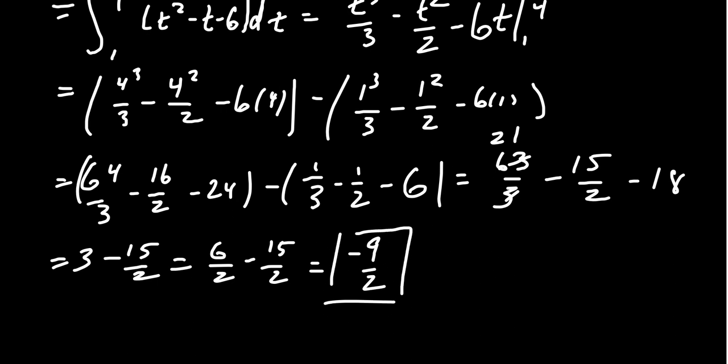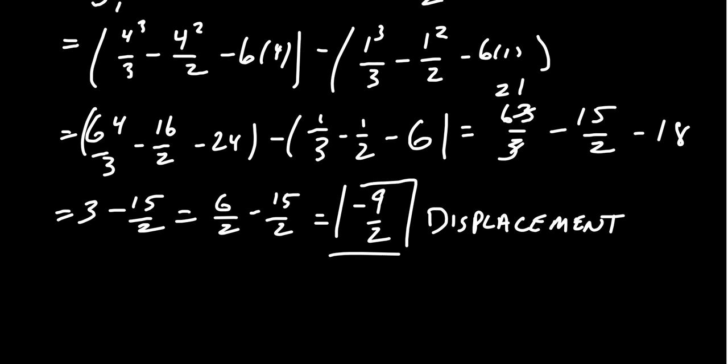This represents the displacement of our particle, and we do want to keep it negative. Unlike geometric area where we want a positive value, here the negative is meaningful — the displacement equals negative 4.5 meters. The negative sign gives us direction: the particle is to the left of its starting location.